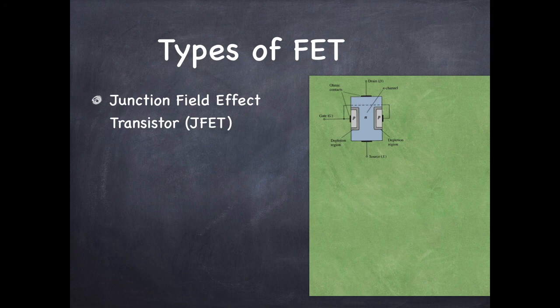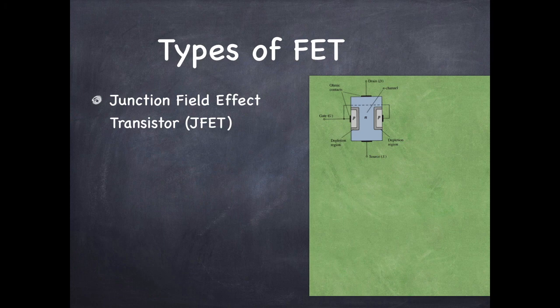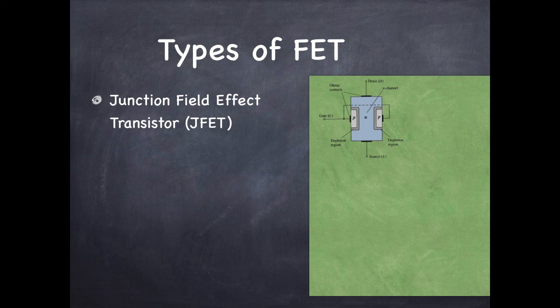Two areas of P type semiconductors are diffused into N type semiconductor and these two P regions are connected internally to get a single external gate lead. The voltage on the gate with respect to source generates depletion region on two PN junctions and thereby controls the flow of current.